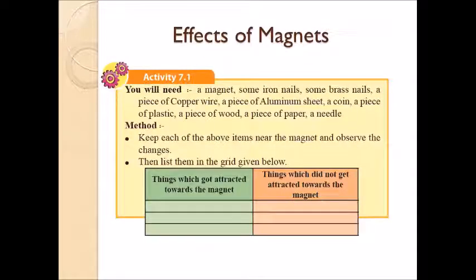Effects of magnets. You can do a simple activity to observe the effect created by magnets on other materials. Here you will need a magnet, some iron nails, some brass nails, a piece of copper wire, a piece of aluminum sheet, a coin, a piece of plastic, a piece of wood, a piece of paper, and a needle. Keep each material near the magnet and observe the changes.